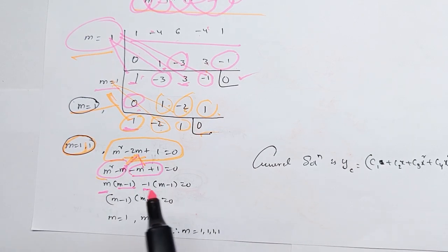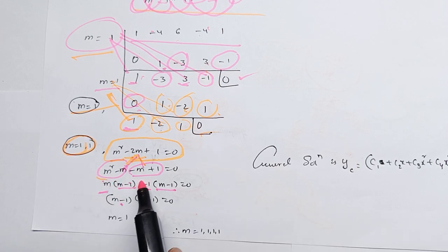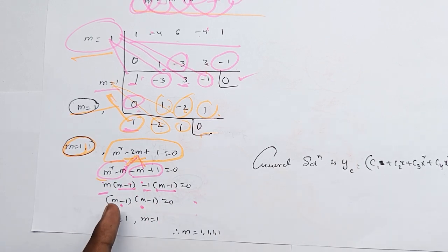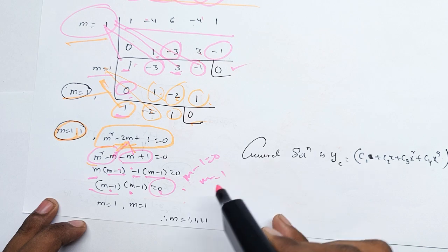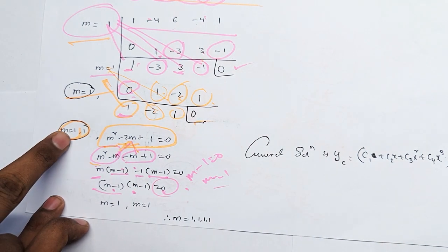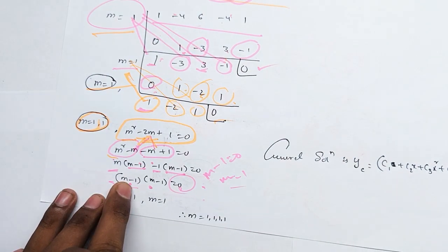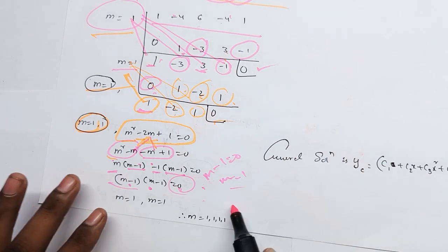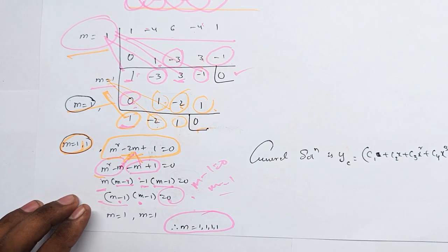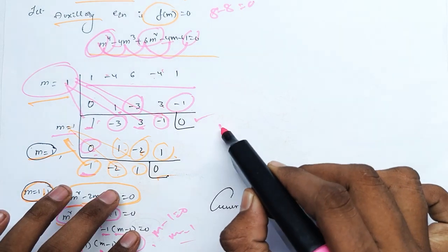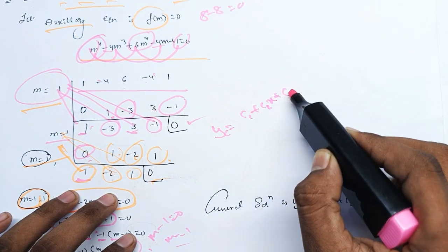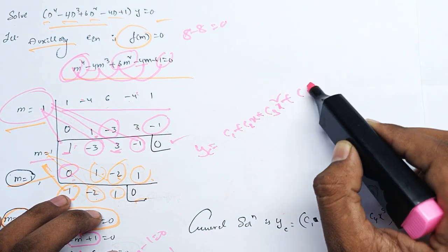m minus 1 equals 0. The first value is equal to 0. Now, this value is equal to 0. So n is equal to 1, 1, 1, 1. So real value is equal to n. So yc is equal to c1 plus c2x plus c3x squared, c4x cube.